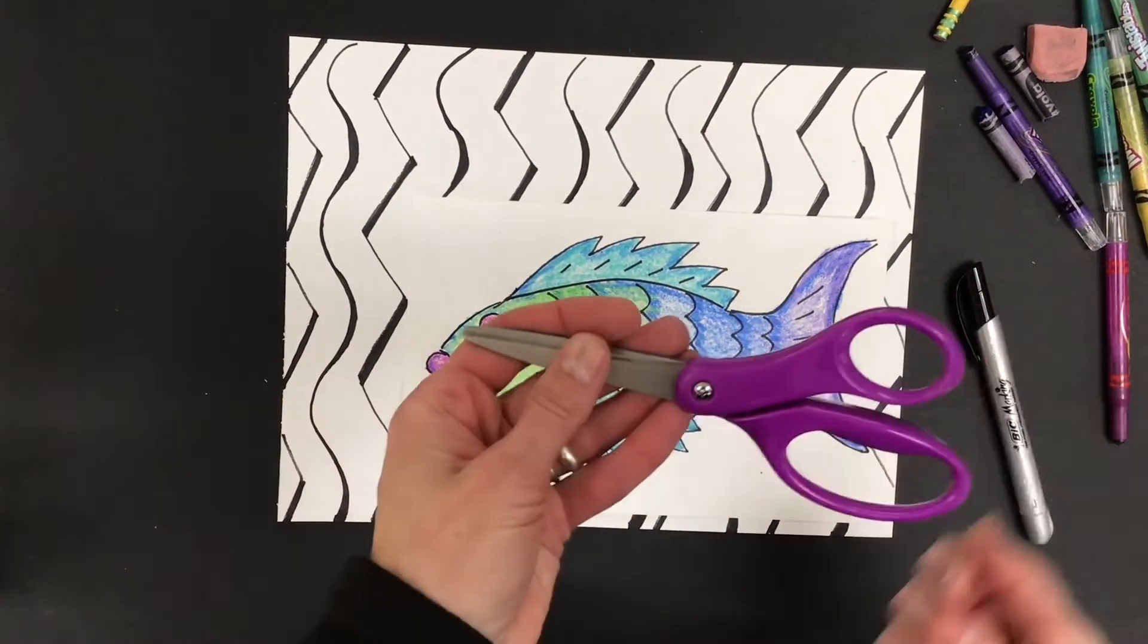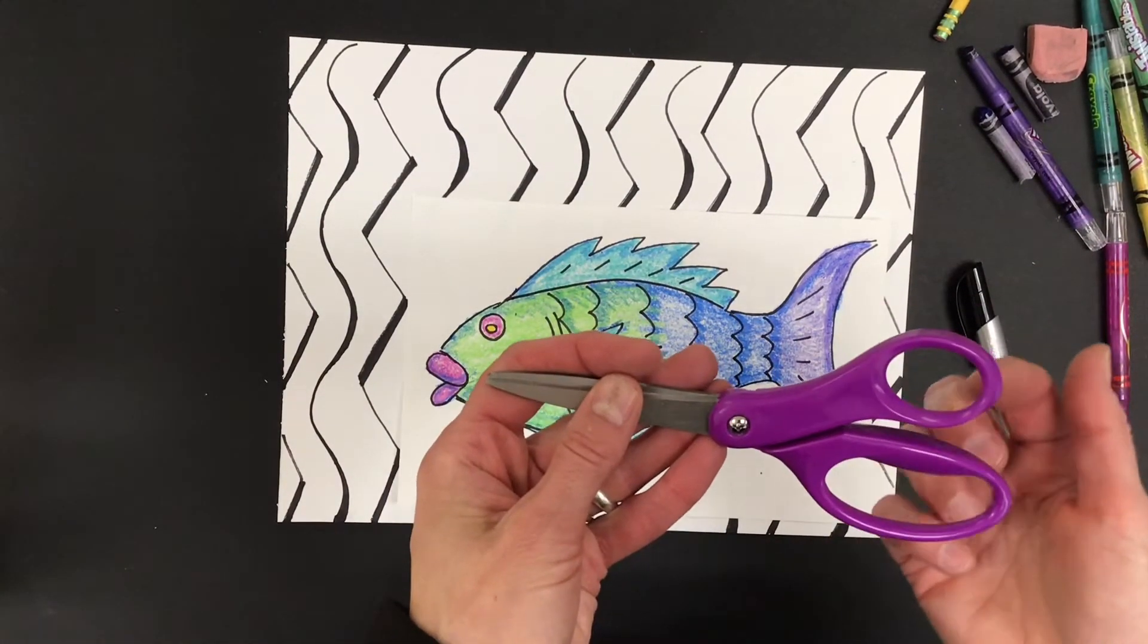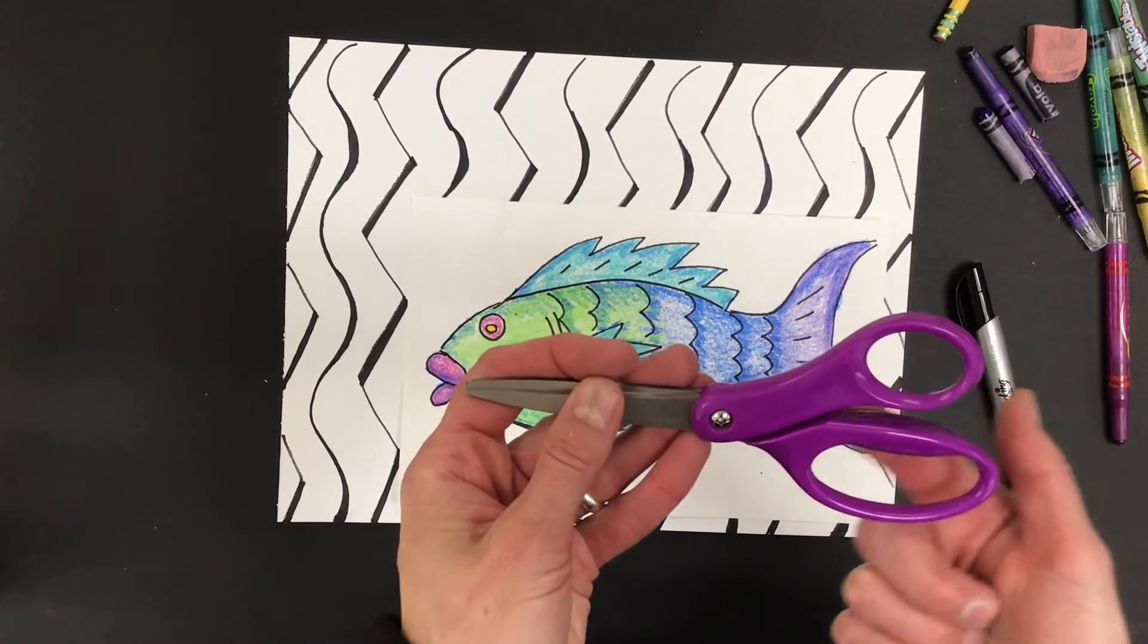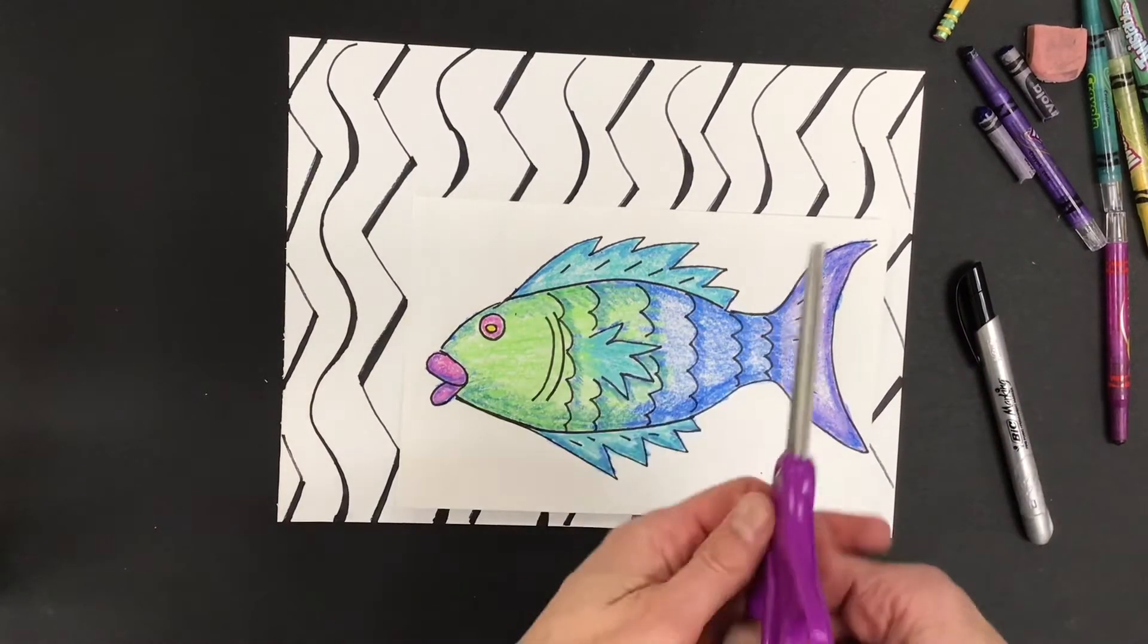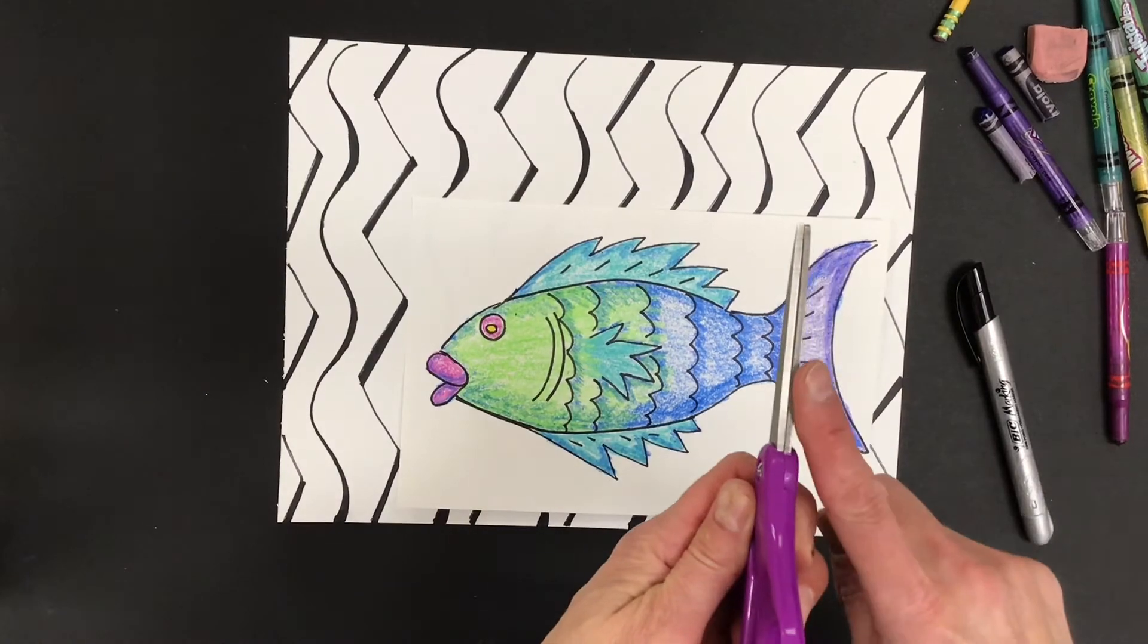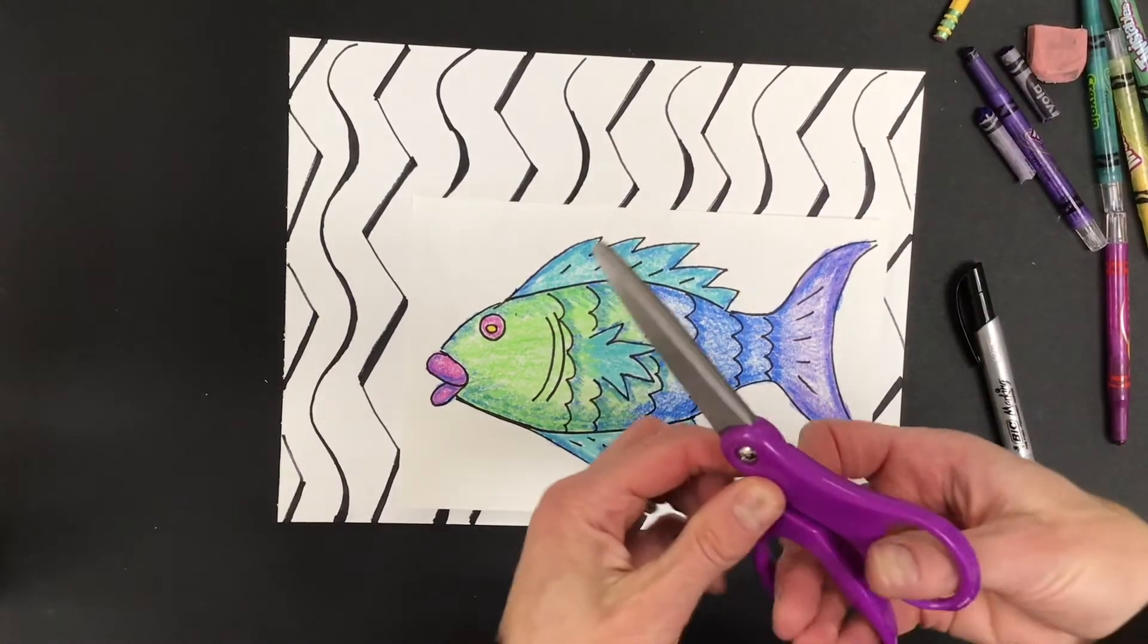Please remember, you're holding your scissors the correct way. You have the little circle for your thumb, the big circle for your fingers. You're always pointing your scissors away from you. And here we go.